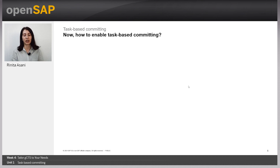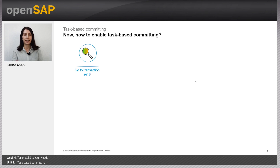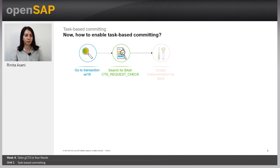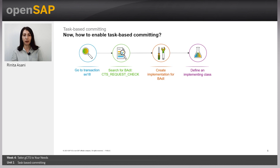How to enable task-based committing? The answer is by enabling a BAdI. The steps are: first, go to transaction SE18; second, in the BAdI section search for CTS Request Check; third, create an implementation for the BAdI; fourth, define an implementing class; and fifth, implement the method Check Before Release.